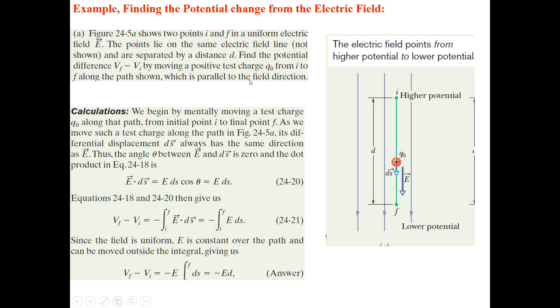This figure shows point I and F. This is your I and this is your F. I stands for initial point and F stands for final position. Two points I and F in a uniform electric field. The points lie on the same electric field line and are separated by distance d.